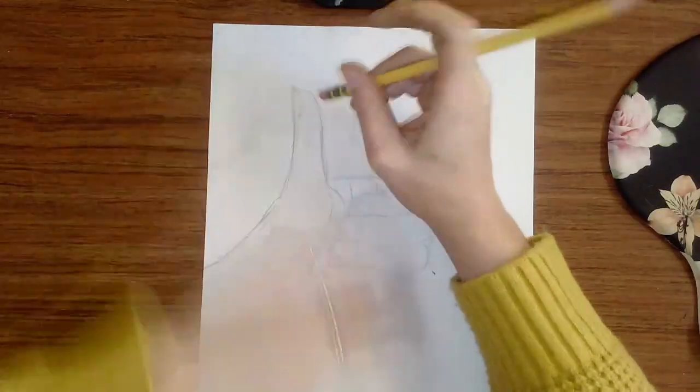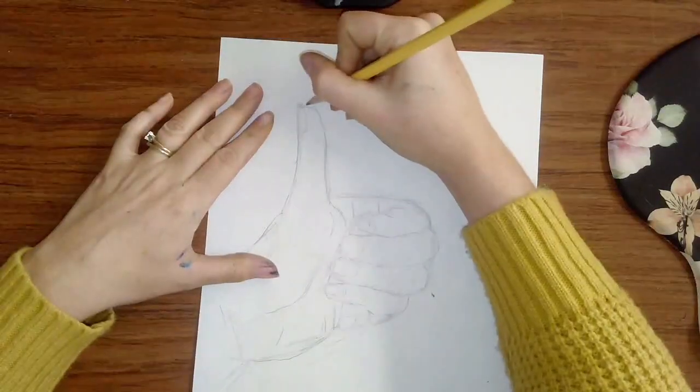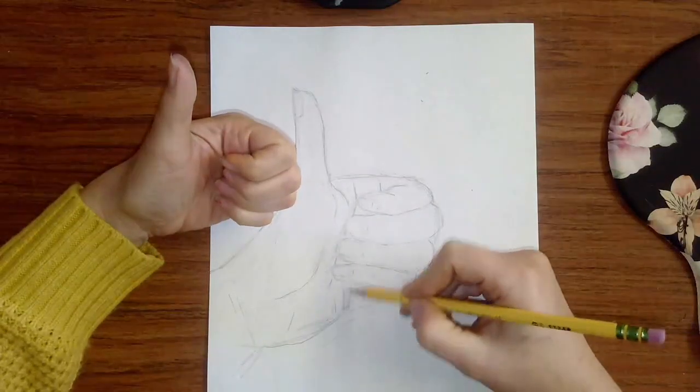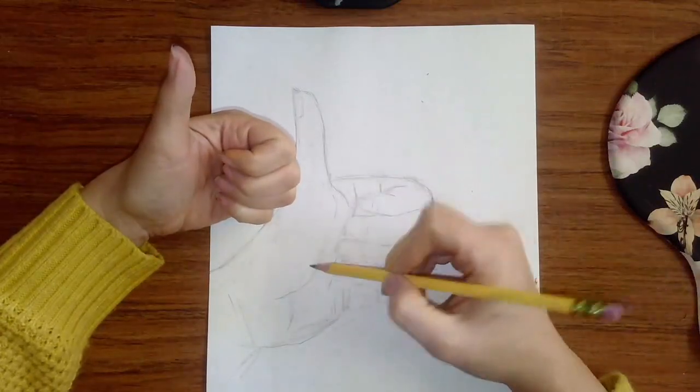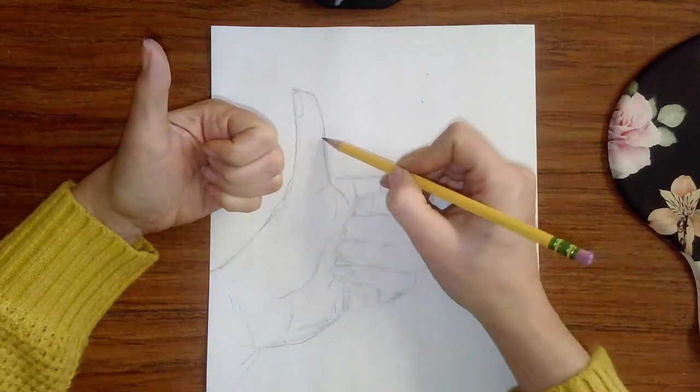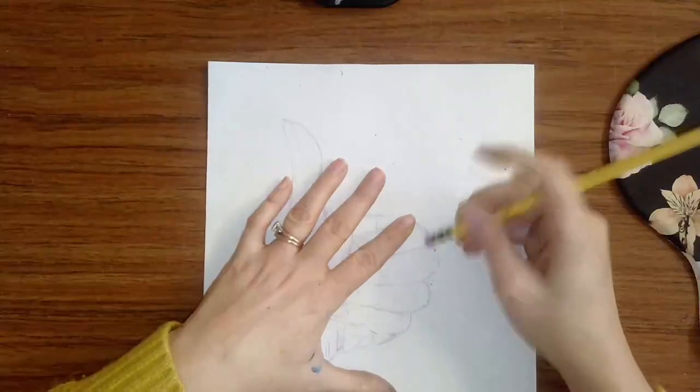All right, and then you just want to kind of tidy up once you feel you got a good sense of the form. So I'm looking now, just like all the wrinkles, make sure I got all those in there. At least the main ones. You don't want to draw every single one. That'll just be probably a little too much.